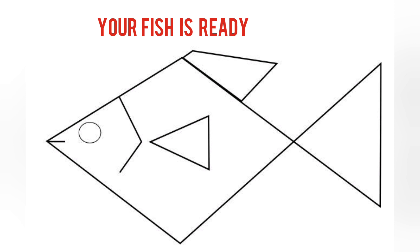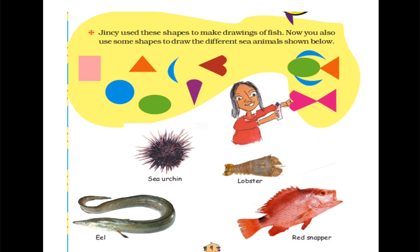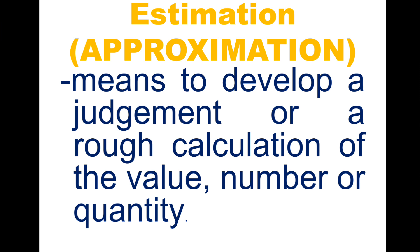Same way you can use a number of shapes to draw a fish. You know, shapes are of different kinds, different sizes and different shapes. Not only fish, different sea animals also you can draw. You can see here different shapes — Jinsi has used different shapes to make a drawing of fish, and different sea animals also you can see here. Now let us proceed to the next mathematical concept, that is estimation.